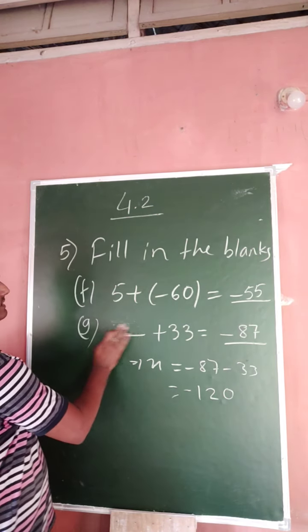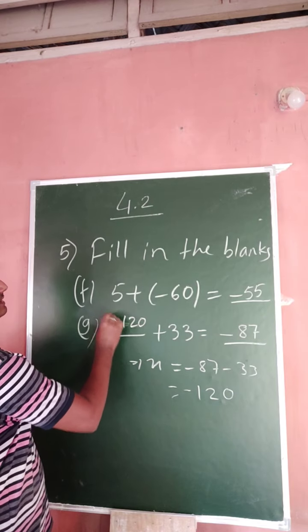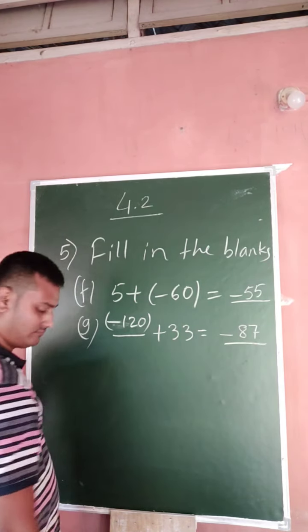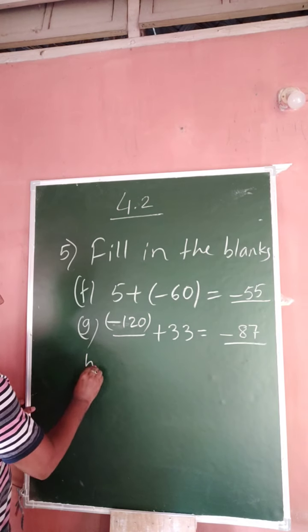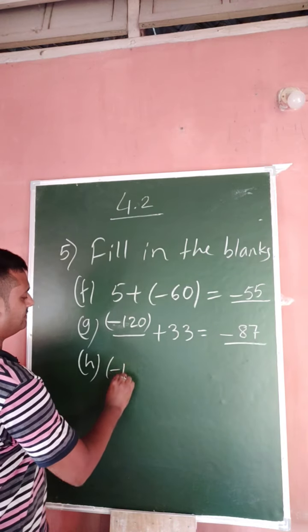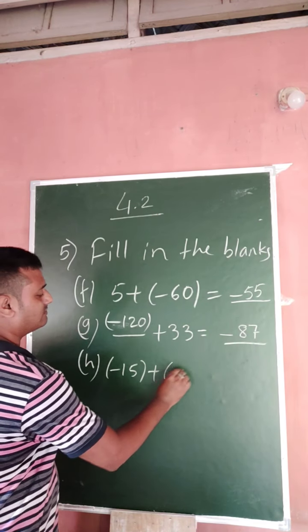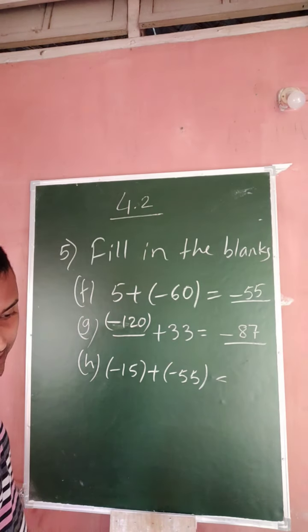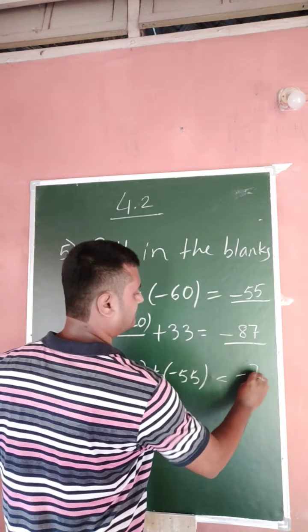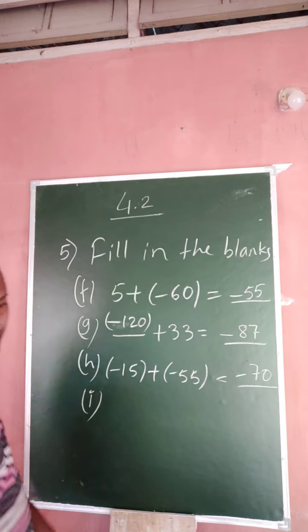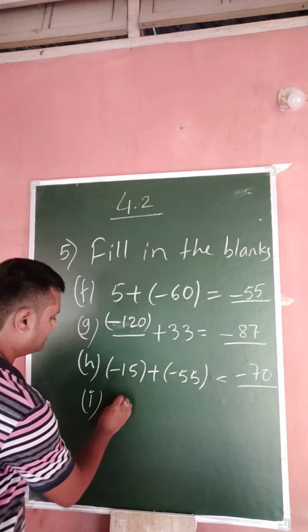So next one is H: minus 15 plus minus 15 plus minus 55. Very easy. Minus, so minus 70. Add them and use the symbol.